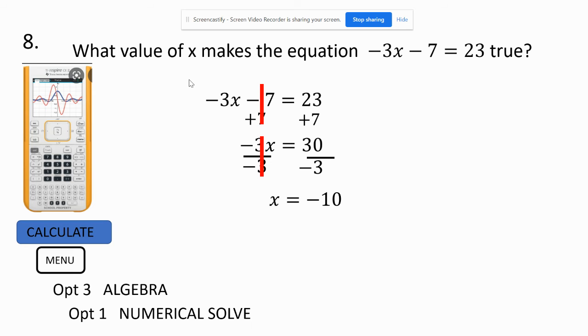Don't forget, you have to be in a calculate page. Hit menu, option 3, algebra numerical solve. And you have to type in the equation exactly as it is with a comma. And if I was using the letter y, I would use the letter y here. Whatever letter I'm using is the one I have to use here. And I hit enter, and it tells me it's also -10. So, I did it correctly.